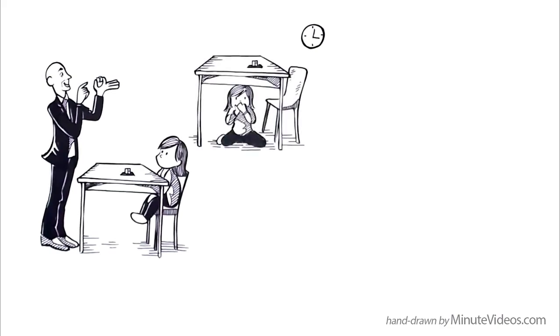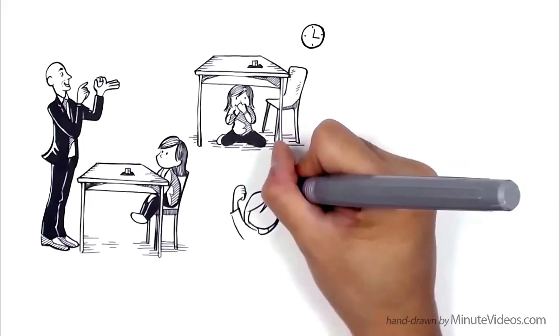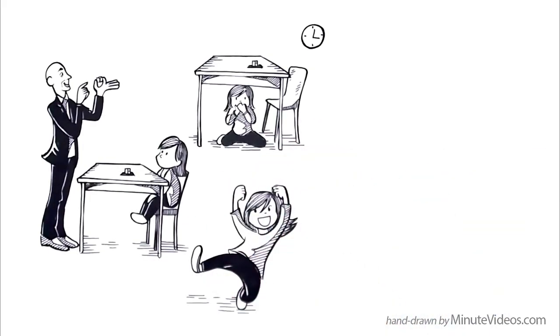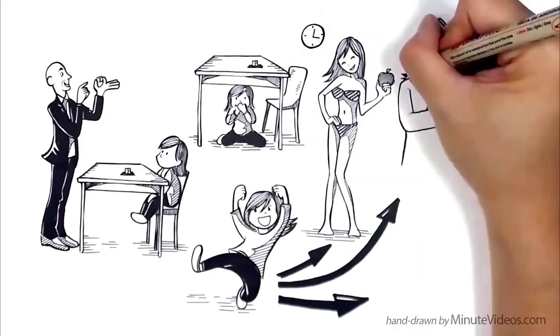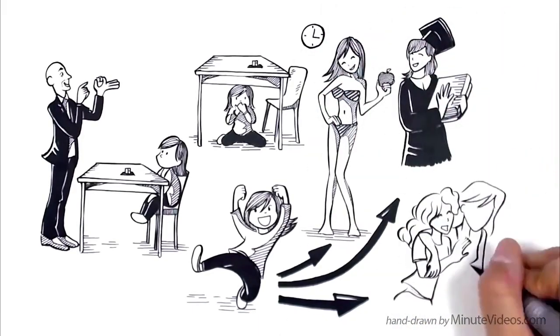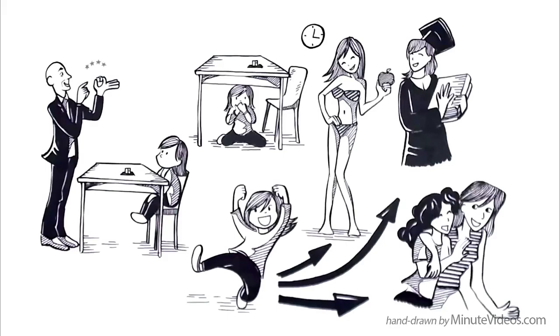Some kids hid below the table. Those who were able to delay their gratification got a second treat and many years later became more accomplished adults. They were more healthy, had higher test scores at school and were socially more competent. Professor Mischel and the Marshmallow Test became famous.